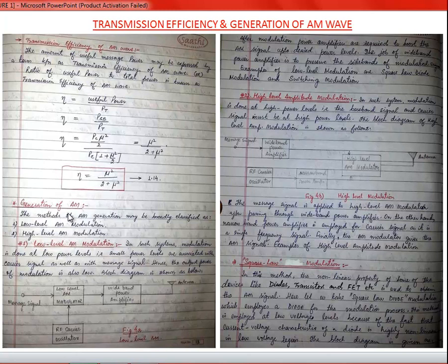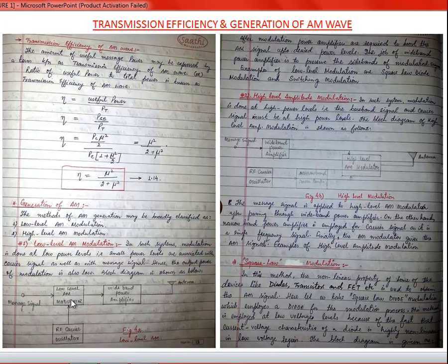Now, generation of AM signals. AM generation methods are broadly classified as low-level and high-level AM generation. In low-level AM modulation, modulation is done at low power levels associated with both the carrier and message signals, so the output power of modulation is also low. The message signal and RF carrier oscillator feed the low-level AM modulator; the modulated signal is then passed through a wideband power amplifier and transmitted via antenna.